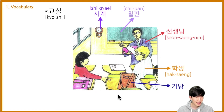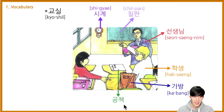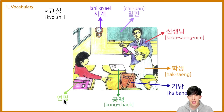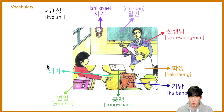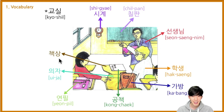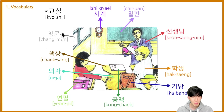And next one, a bag — 가방. 가방. And next one, notebook — 공책. 공책. 공책. 연필. 연필. 좋아요. Next one, chair — 의자. 의자. Desk — 책상. 책상. The last one, window is 창문. 창문. 자, is that okay? 좋아요. Let's move on.